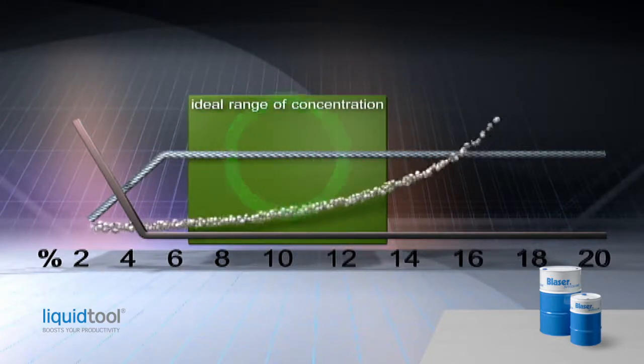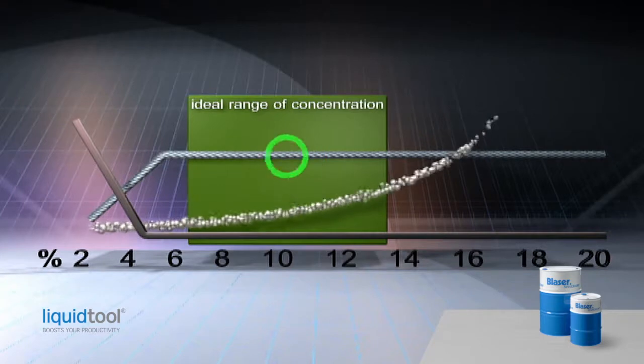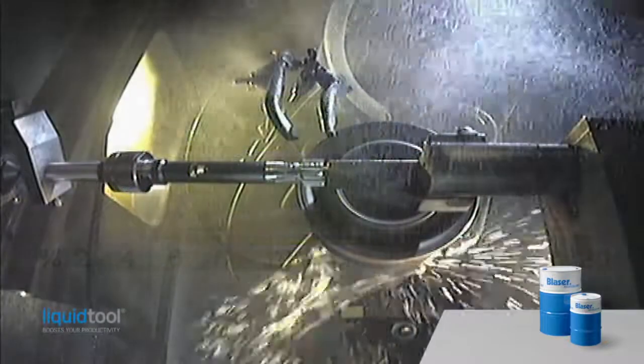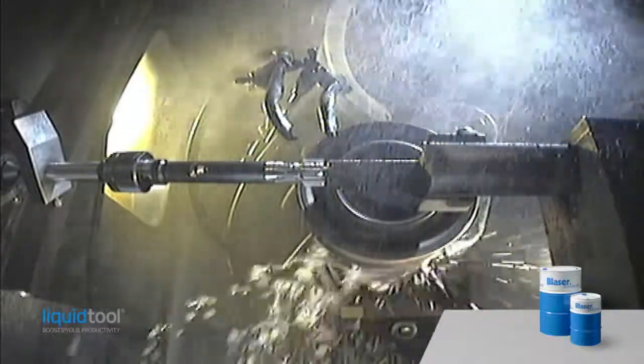It is therefore important to keep the emulsion concentration in the green range. This range depends on the kind of cutting fluid and the workpiece material.